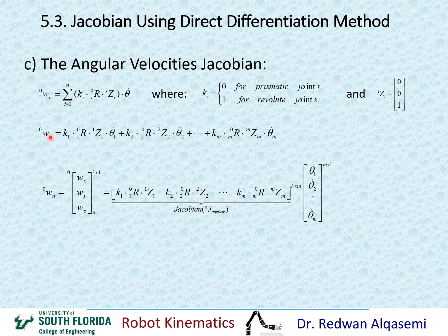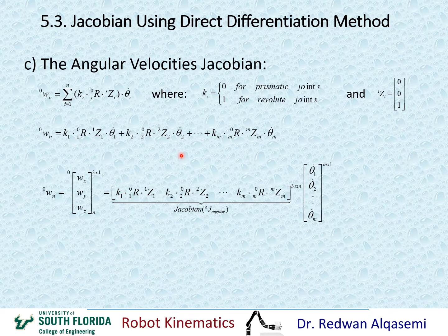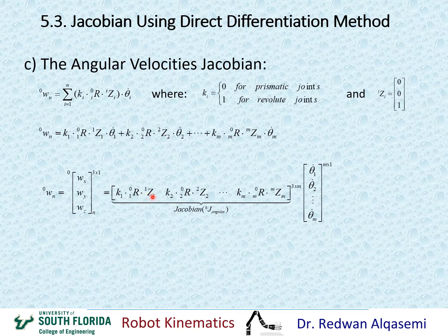Since omega of n represents omega x, omega y, and omega z of frame n relative to frame 0 — a 3 by 1 matrix — we can put all these vectors together and separate out theta dot 1, theta dot 2, all the way to theta dot m into its own m by 1 vector. What remains is the angular Jacobian relative to frame 0, made up of 3 by 1 column vectors, giving a matrix of dimension 3 by m, where m is the number of joints.